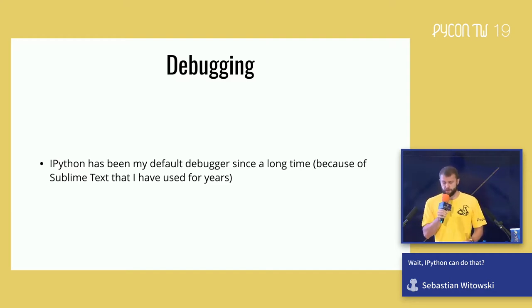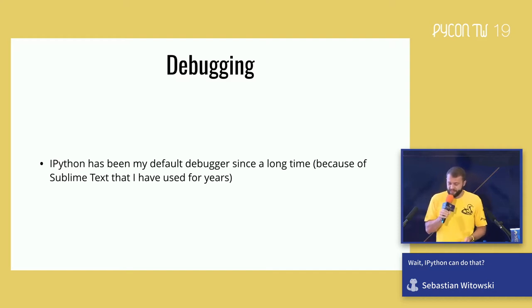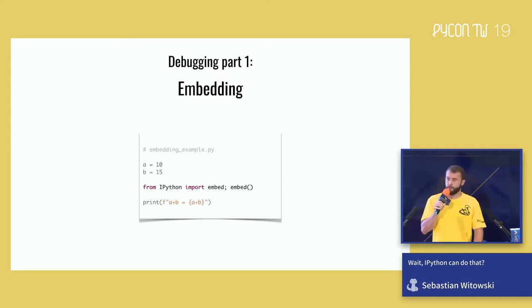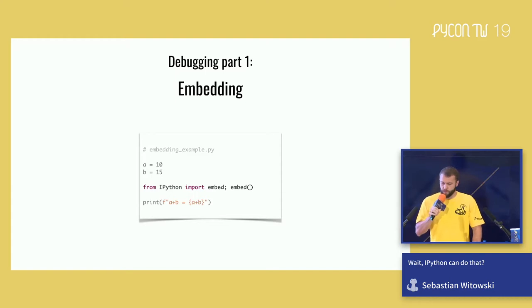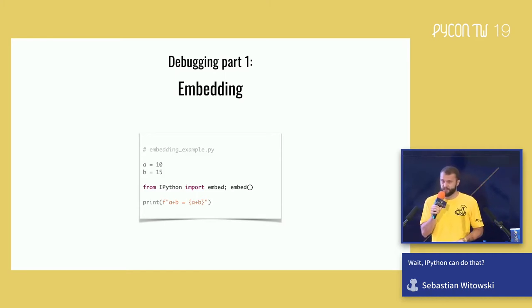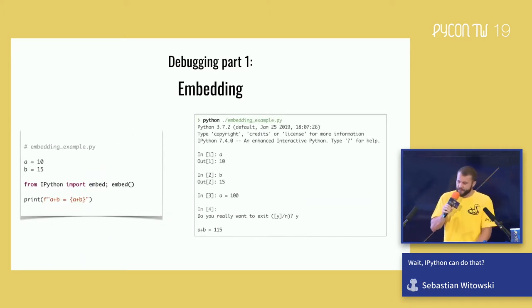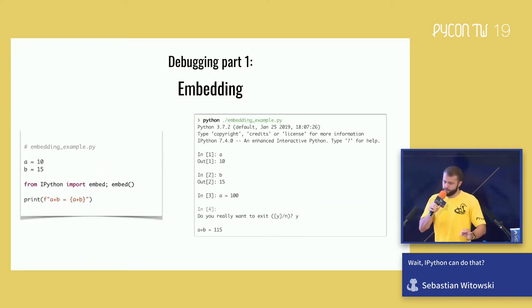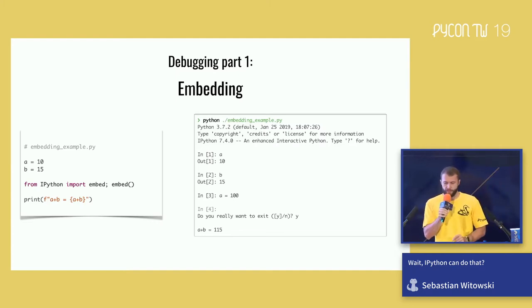IPython is my default debugging tool. It all started because I was using Sublime Text for a long time and only recently switched to Visual Studio Code. The first thing you can do is embed IPython anywhere in your code — import the `embed` function from IPython and just call it. I like to put those two statements on one line so I can remove them with just one keystroke, and all the code linters will complain about it so I don't forget to remove it when I'm done. When the interpreter gets to that line it will open the IPython shell, and I'll have access to all the variables set at that point so I can poke around and see what's going on with my code.